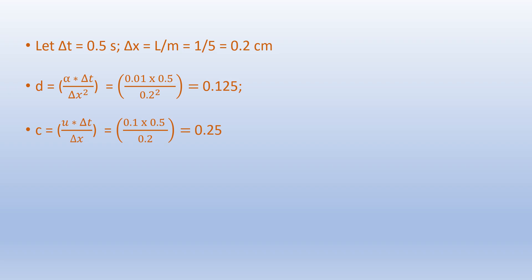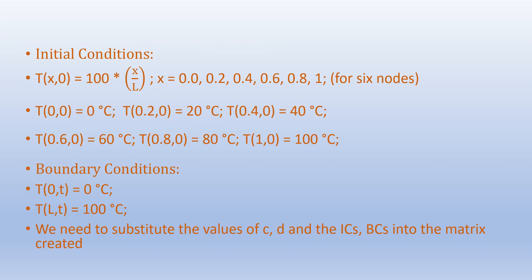Now we can plug numbers into the variables in the matrices and vectors. Let delta t equal 0.5 seconds and delta x equals L over m, which is 1 over 5 equals 0.2 centimeter. The diffusion number d equals alpha times delta t over delta x squared, which equals 0.125. The convection number c equals u times delta t over delta x, which equals 0.25. The initial conditions give T(x, 0) equals 100 times x over L, yielding temperatures varying from 0 degrees Celsius at one boundary to 100 degrees Celsius at the other in a linear fashion. The boundary conditions are T(0, t) equals 0 and T(L, t) equals 100 degrees Celsius.